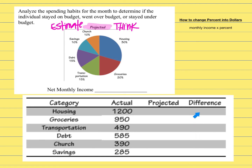To turn your percent number into actual dollars, take your monthly income and multiply it by the percent as a decimal. So for housing, 30% becomes 0.30. For groceries, 20% becomes 0.20. For transportation, 15% becomes 0.15. Then we'll look at the projected versus the actual spending for each category.